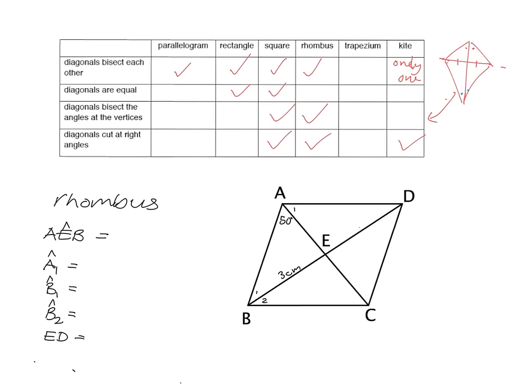They can give us an example where they ask us to find things. For example, if ABCD is a rhombus and they tell us that this angle here is 50 degrees and EB is three centimeters, and they want us to work out various things. The first thing is angle AEB — that's the angle where the two diagonals intersect. We know that in a rhombus they intersect at right angles, so obviously that is 90 degrees.